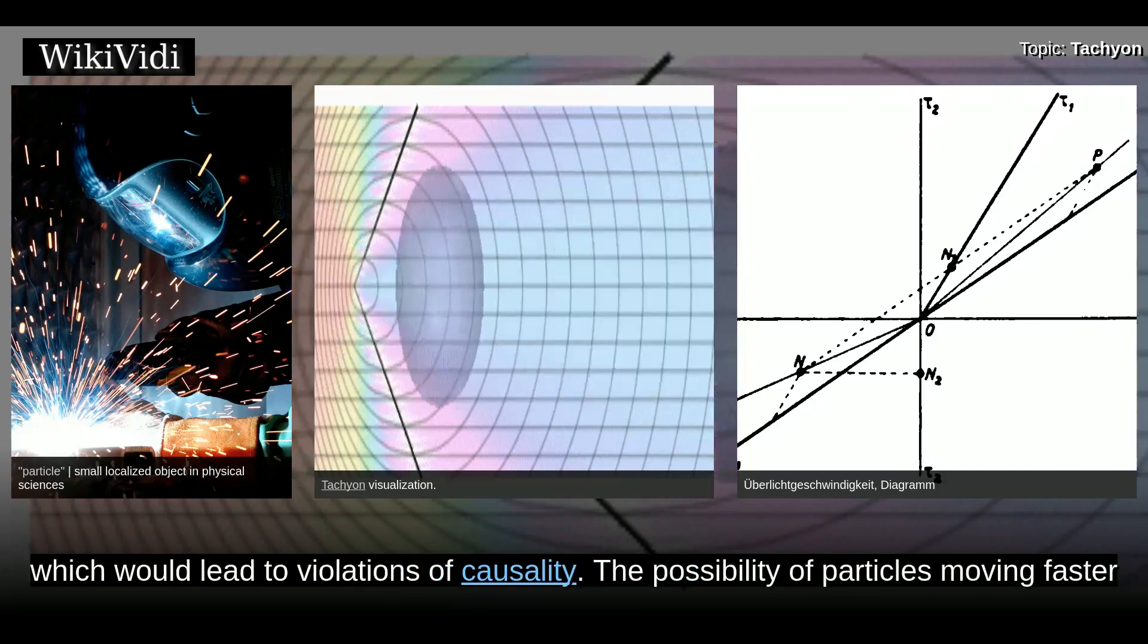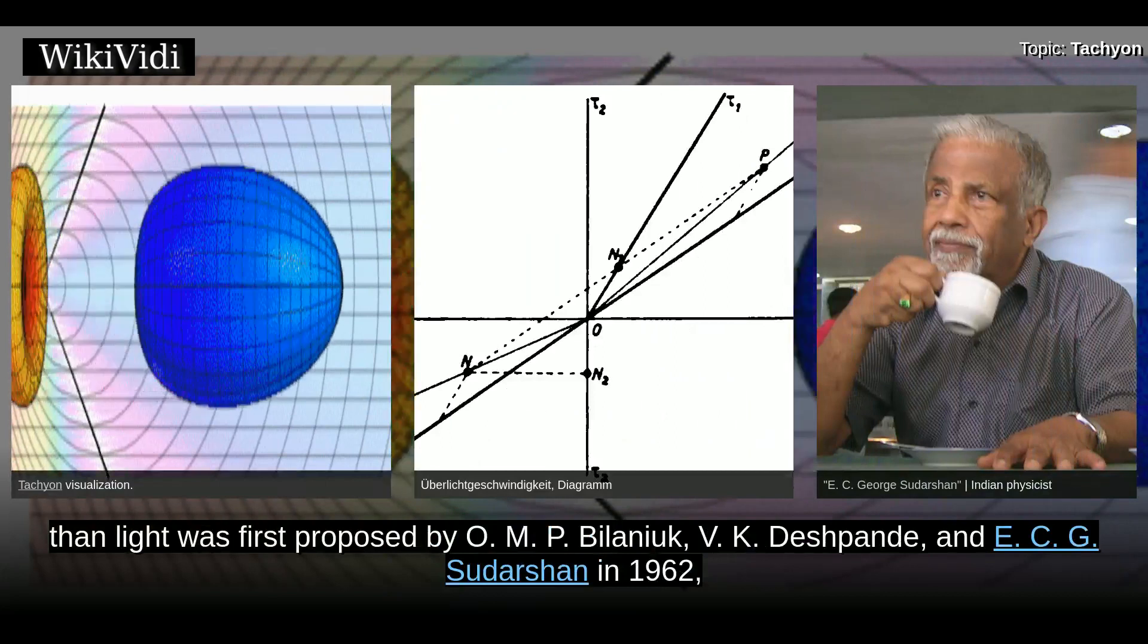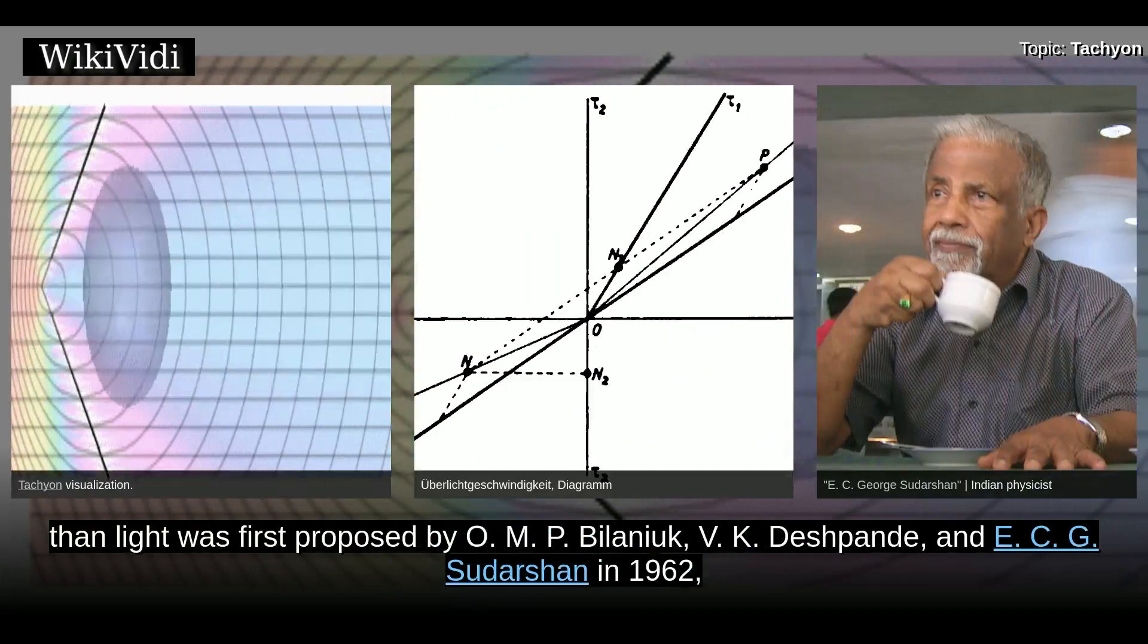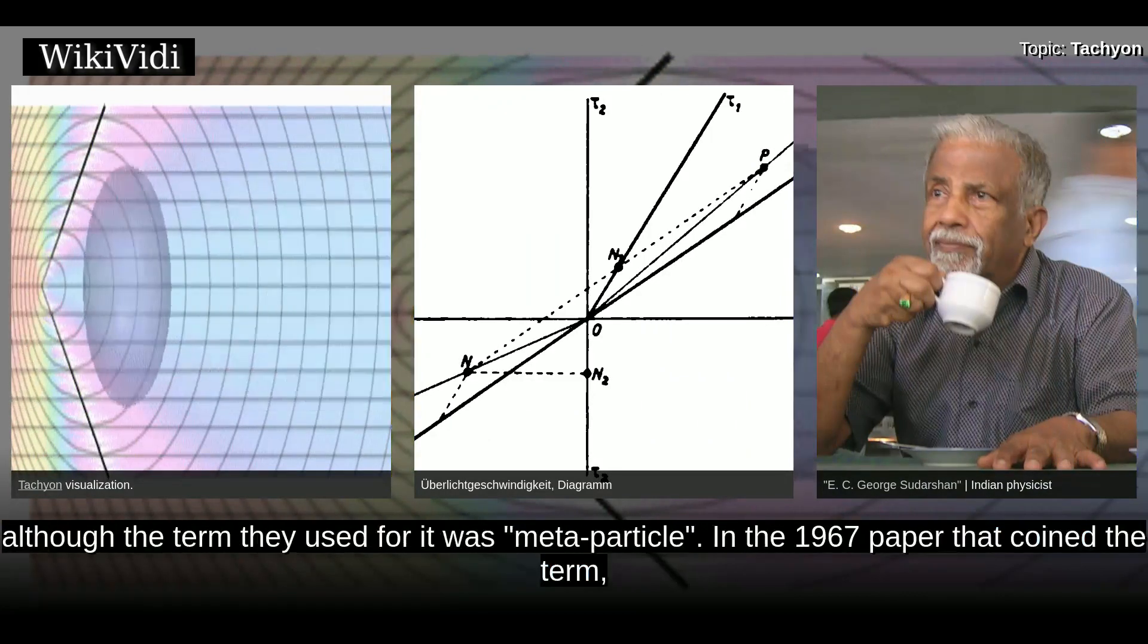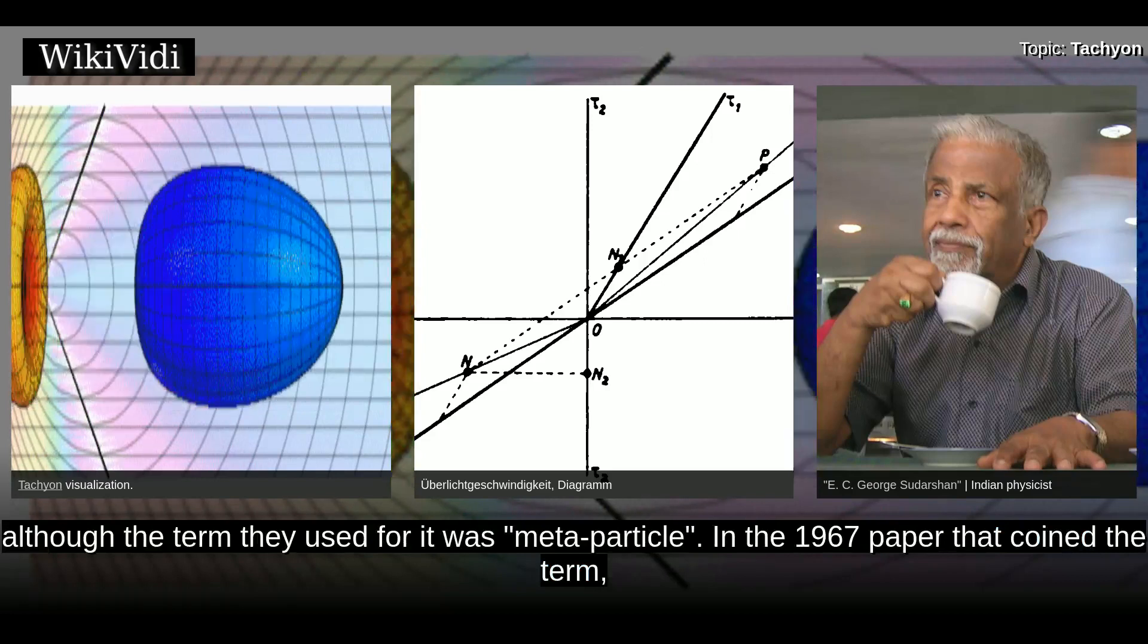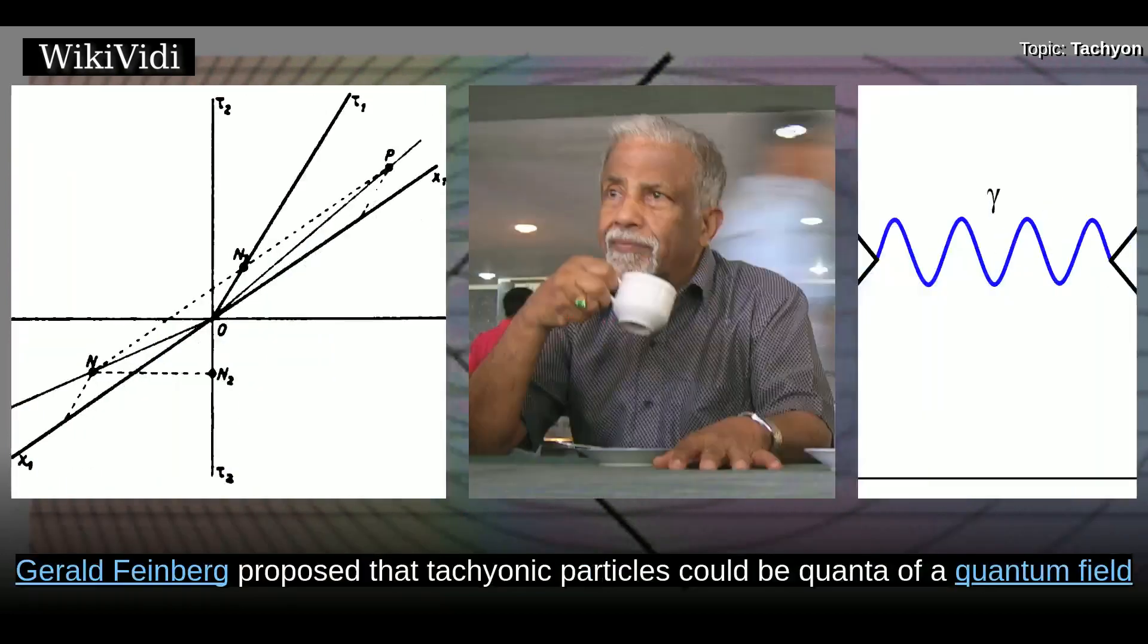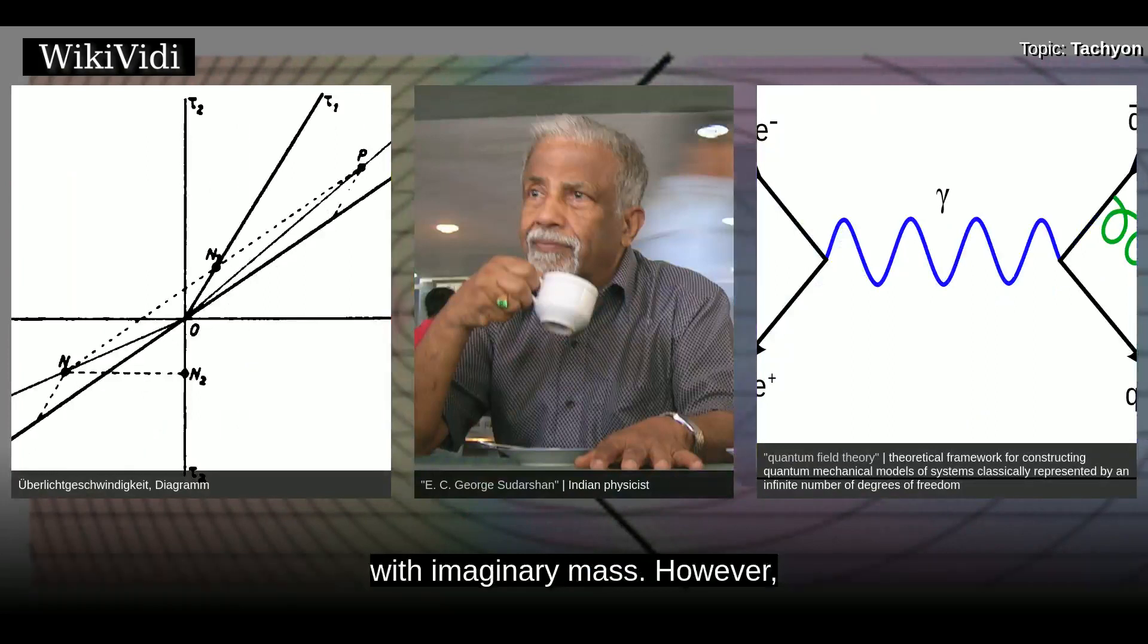The possibility of particles moving faster than light was first proposed by O.M.P. Bilaniuk, V.K. Deshpande, and E.C.G. Sudarshan in 1962, although the term they used for it was meta-particle. In the 1967 paper that coined the term, Gerald Feinberg proposed that tachyonic particles could be quanta of a quantum field with imaginary mass.